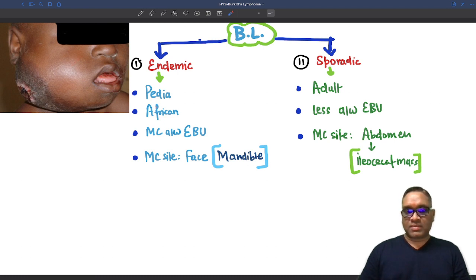Most commonly, they are associated with Epstein-Barr virus. So remember, Epstein-Barr virus is more commonly associated with endemic. E for endemic, E for Epstein-Barr virus.